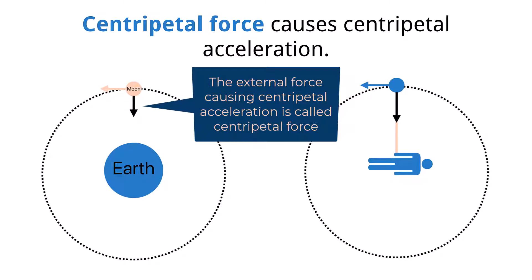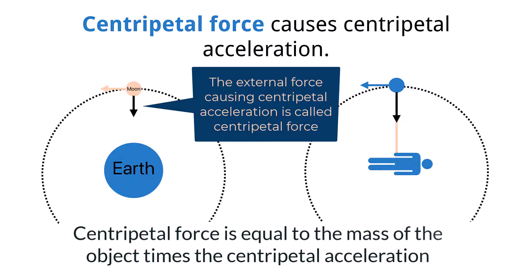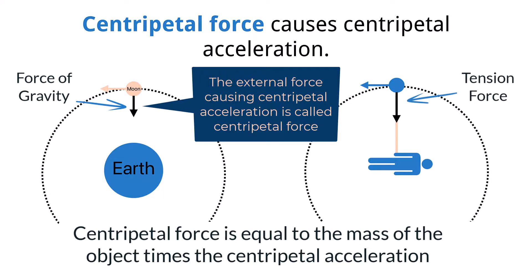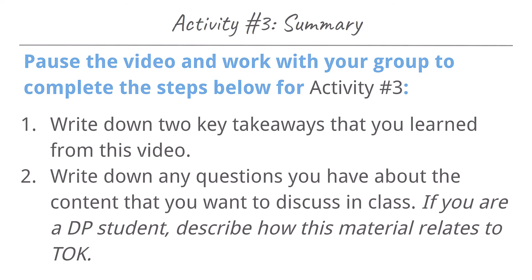In the case of centripetal force, we must remember Newton's second law, which says that the force causing the acceleration is equal to the mass of the object times the acceleration. In circular motion, the centripetal force can then be defined as the mass times the centripetal acceleration. Importantly, the type of force providing the centripetal force matters. For example, in the case of the moon orbiting Earth, the force causing the centripetal force is the force of gravity. However, in the case of a ball being swung around attached to a string, the force causing the centripetal force is the tension force. In both cases, the direction of the force acts between the object and towards the center of the circle.